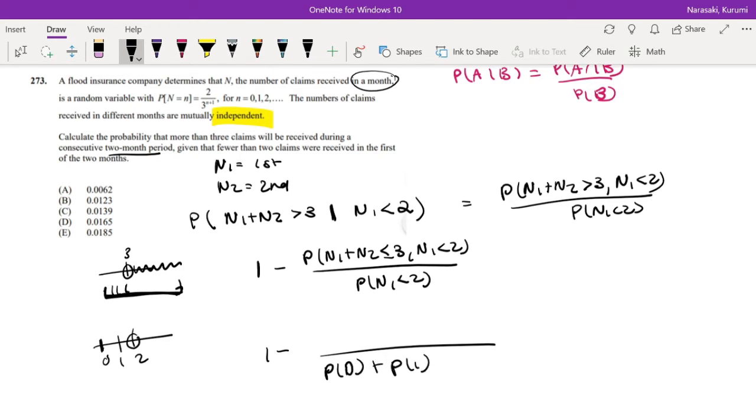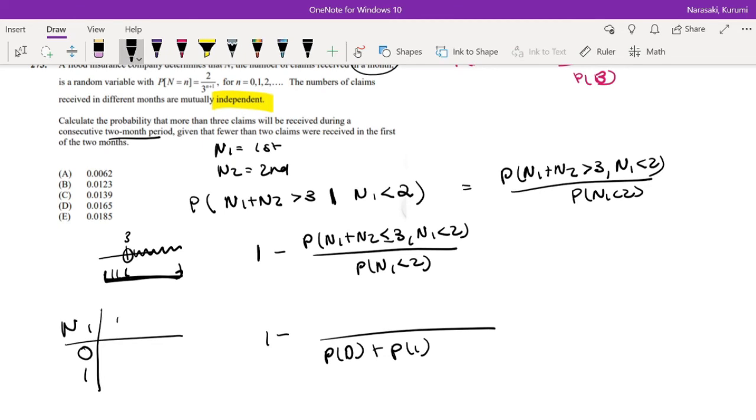So when can n1 plus n2 be less than 3 and n1 is less than 2? I think I'm going to make a little chart. Well n1 we said is less than 2 when it is equal to 0 or 1. And we're trying to find the probability that n1 plus n2 is less than 3. So what possible values? Well that means n1 plus n2 can add up to 0, 1, or 2, or 3.